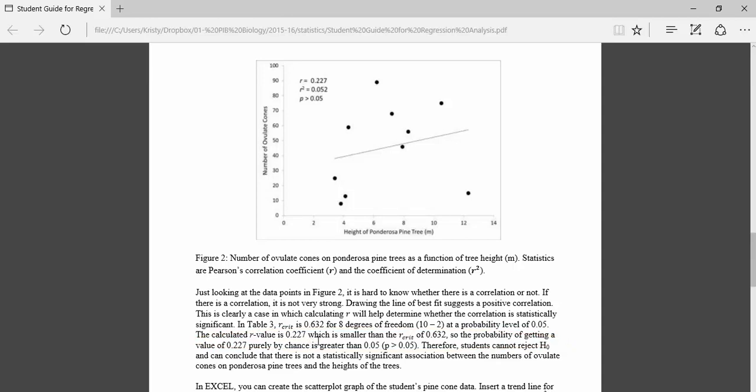The calculated R value is smaller than the critical value. So just like when we learned in the t-test, a smaller observed value means that you cannot reject the null hypothesis. The same is true for our regression analysis. Having a smaller R value than R critical means that the students in this case cannot reject the null hypothesis. They can't say that there's strong correlation between these two variables.